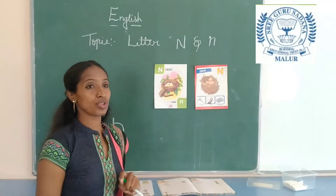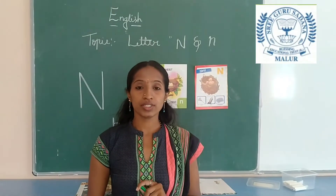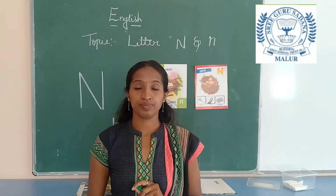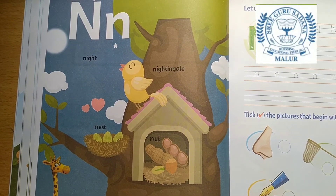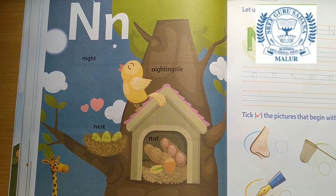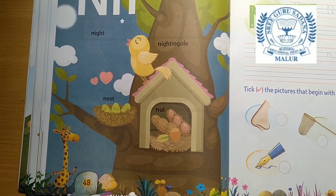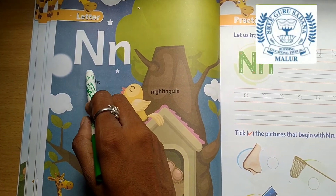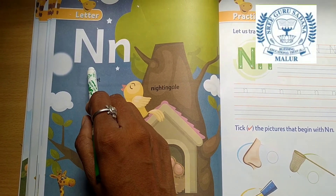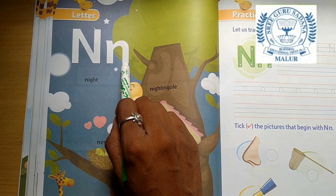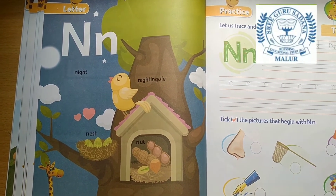Next, I will show you some more examples for letter N. In your textbook, this is your literacy skill book, page number 48. This is capital N and small letter N. N sound is N.